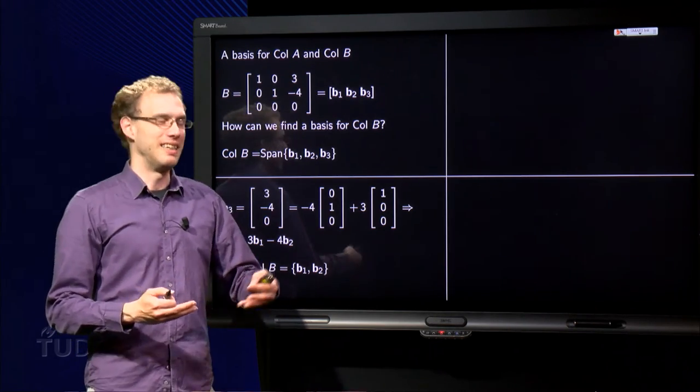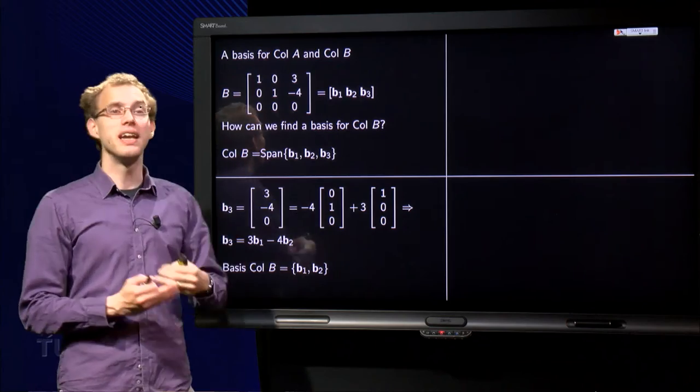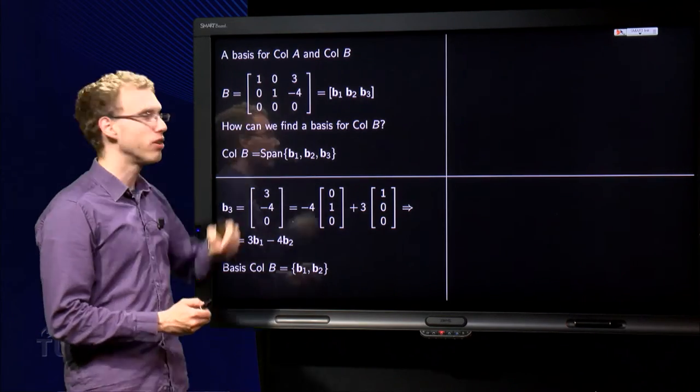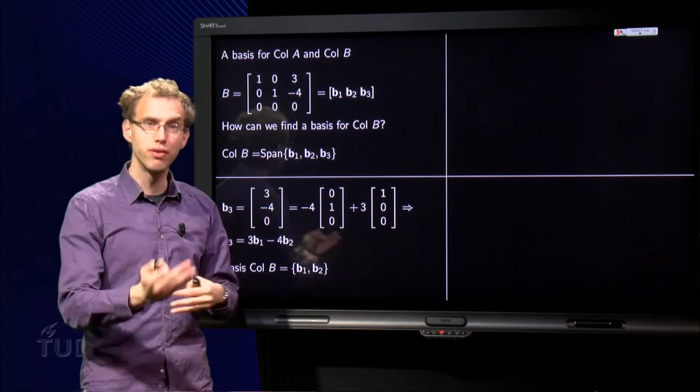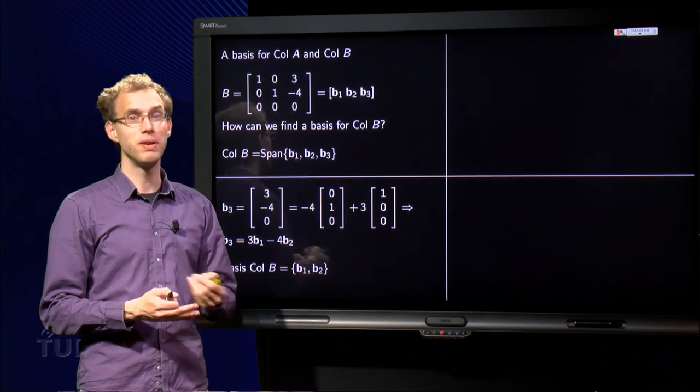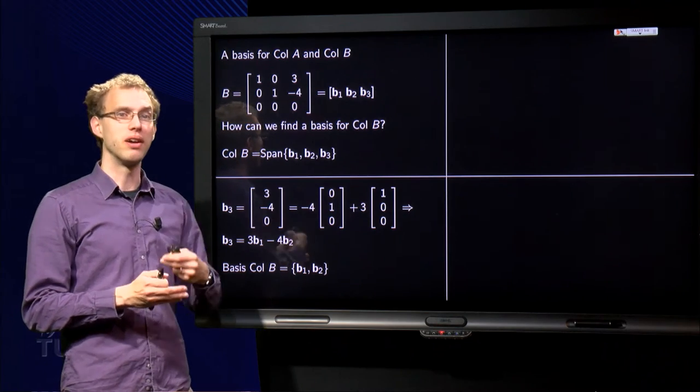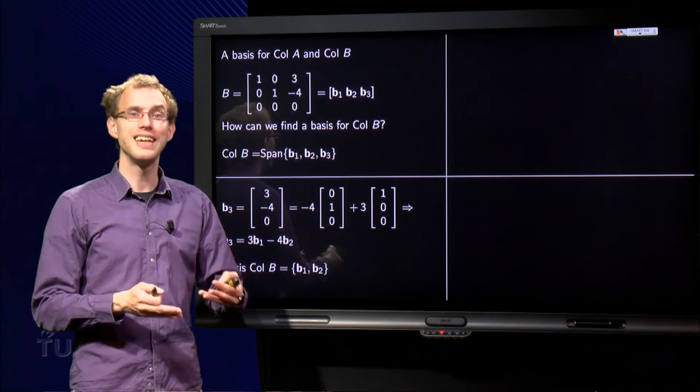Well, this one is easy. I mean, B is already in reduced echelon form, so you can immediately see that the third column is a linear combination of the first two. But then what happens if I have a matrix A which is not in reduced echelon form? How can we see the dependence relationship in that case?